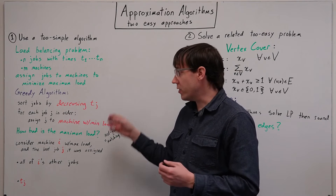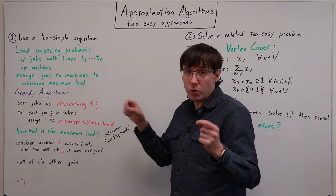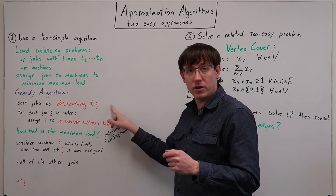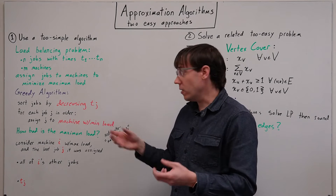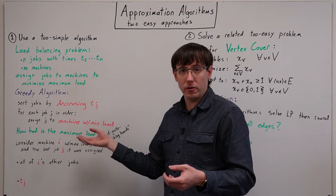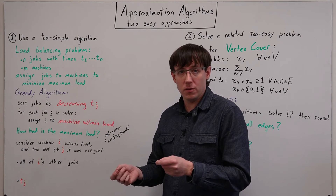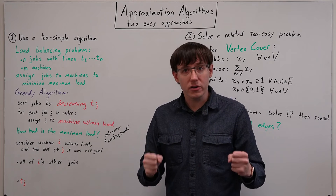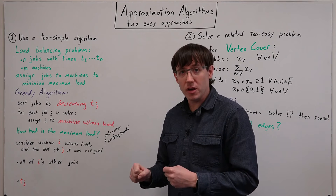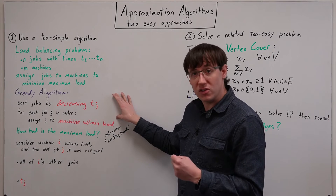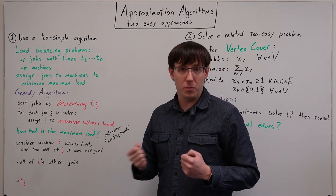And as we've done before with other greedy algorithms and incorrect orderings, you can come up with a collection of jobs and a number of machines where, if we followed this greedy algorithm, we would not get the optimal load balance. But our goal here isn't to solve this problem optimally. Our goal instead is to think about how close does this get to an optimal solution, and is it a good enough approximation?